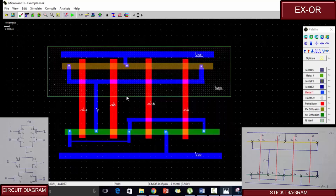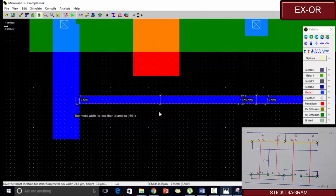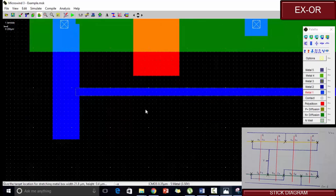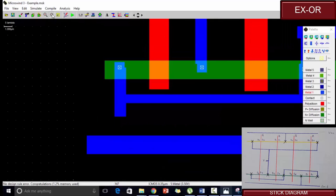Now to check whether there are any issues with the lambda rules, we have this design rule checker. Here we can see that the metal width is less than 3 lambda. So to change it, we can simply extend the metal. Let us check it again. Now we can see that no design rule error is there. So this is fine for the final output.